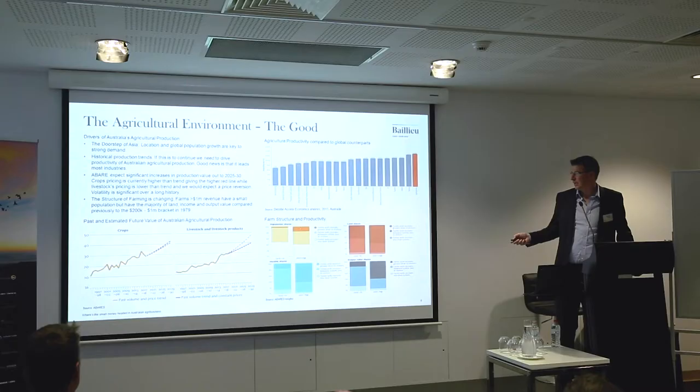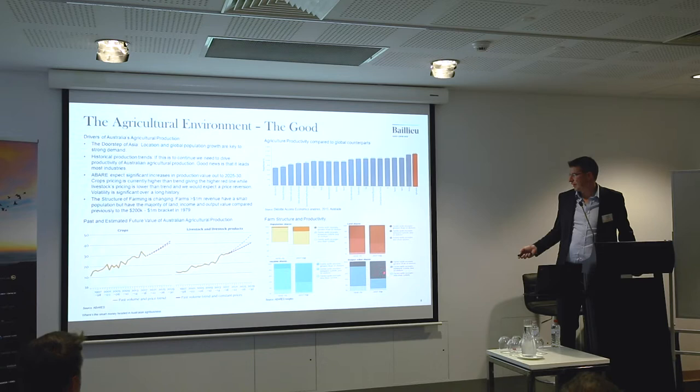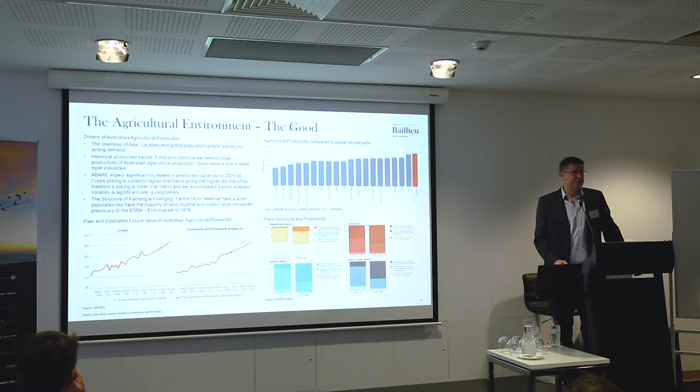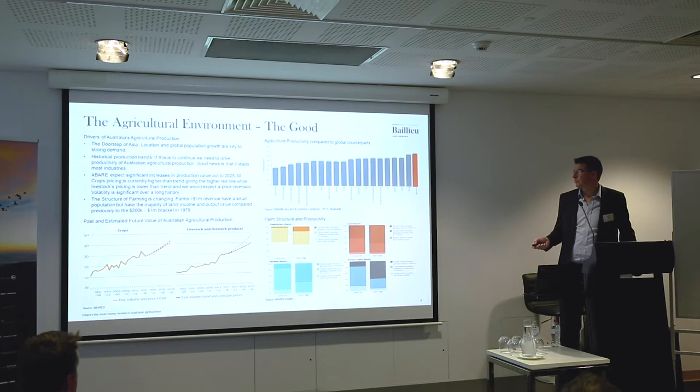Looking at farm structure and productivity from 1979 through to 2017-18, the top dark bar shows the population share of farms with receipts greater than one million dollars — that population share was relatively low and has increased by about 20% in percentage terms. But the income share, land share, and output value shares of those million-dollar-plus farms really shows that productivity is moving through the whole agricultural sector.